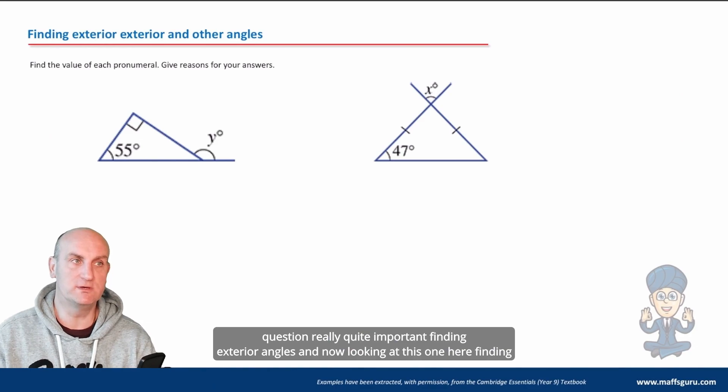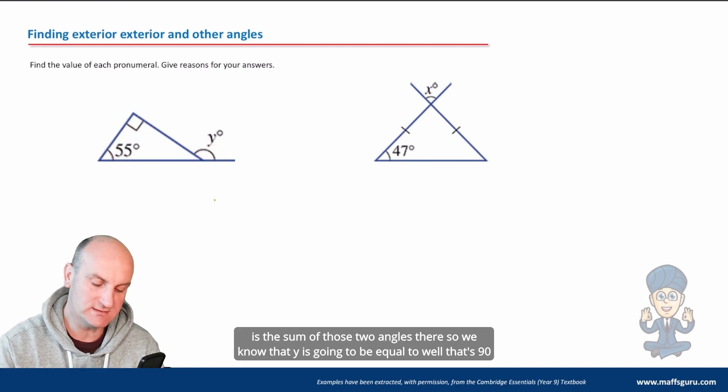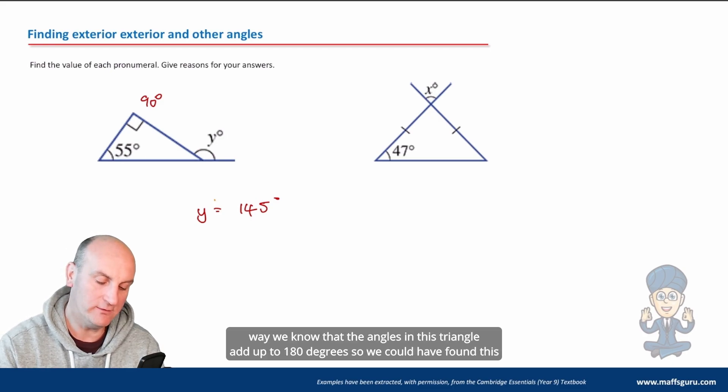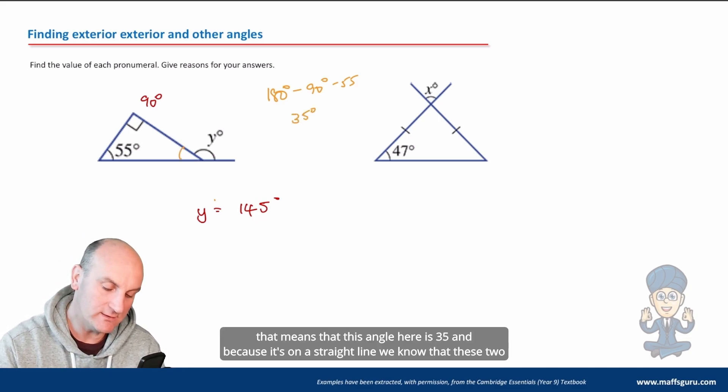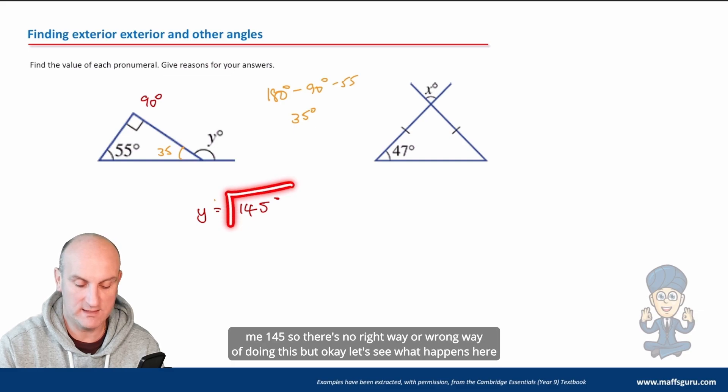Finding exterior angles: we can use our little rule that said that this angle here is the sum of those two angles there. So we know that y is going to be equal to, well that's 90 degrees and that's 55 degrees, so y is going to be 145 degrees. Alternatively we could have done it in a different way. We know that the angles in this triangle add up to 180 degrees, so we could have found this angle here to be 180 minus 90 minus 55, gives me 35 degrees. That means that this angle here is 35, and because it's on a straight line we know that these two must add to 180 degrees. So if I did 180 minus the 35, funnily enough it's going to give me 145.